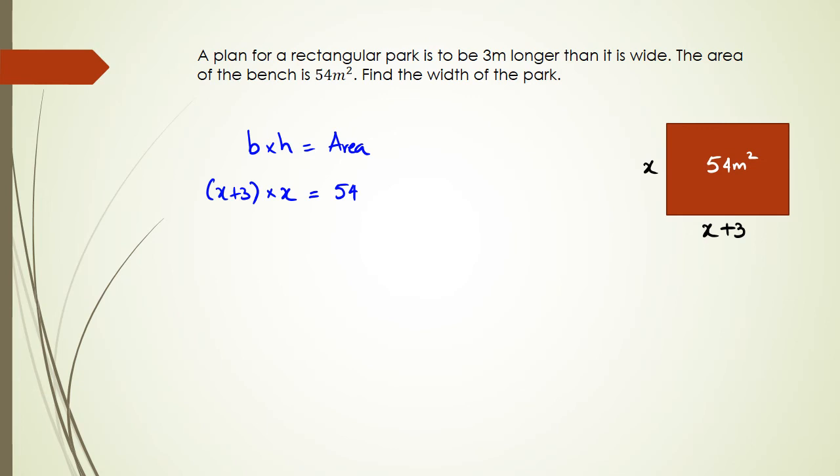I have seen so many people make mistakes on these types of questions. Sometimes they just write down that this equals x² + 3 instead of expanding it out properly. Remember that x is actually being multiplied by both terms, so we have x times x which is x², and then x multiplied by positive 3 which is +3x, and that equals 54.